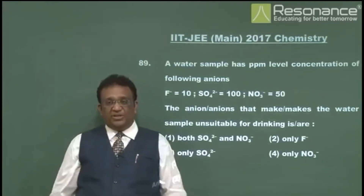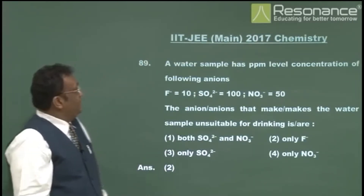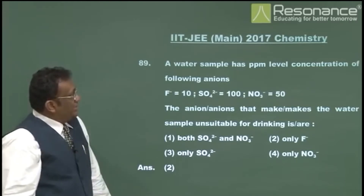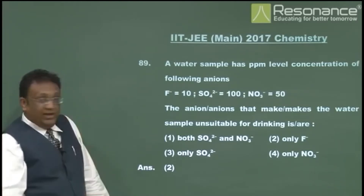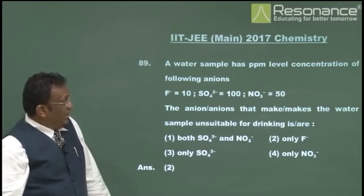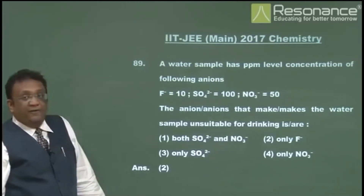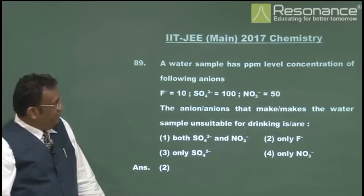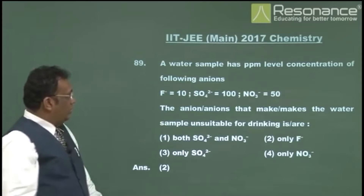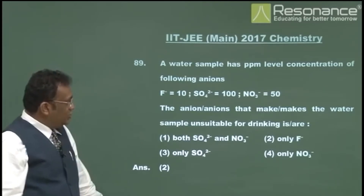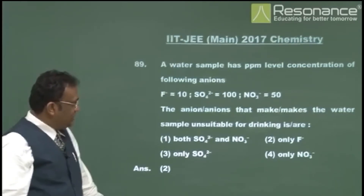Question 89: a water sample has ppm-level concentrations of fluoride (10 ppm), sulfate (100 ppm), and nitrate (50 ppm). Which anion or anions make the water sample unsuitable for drinking?